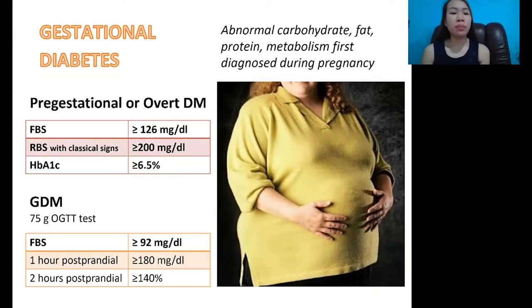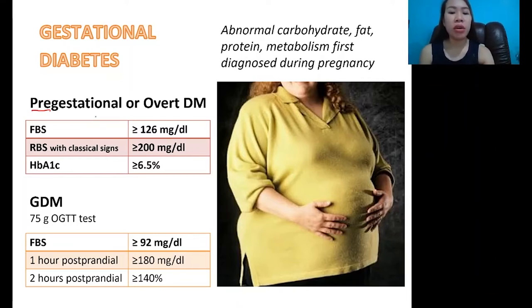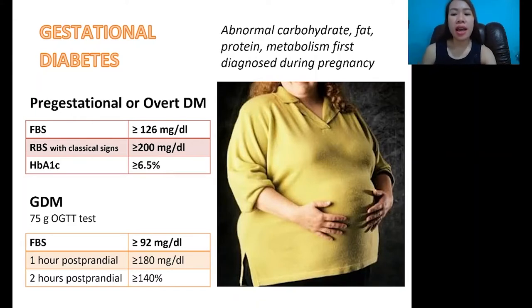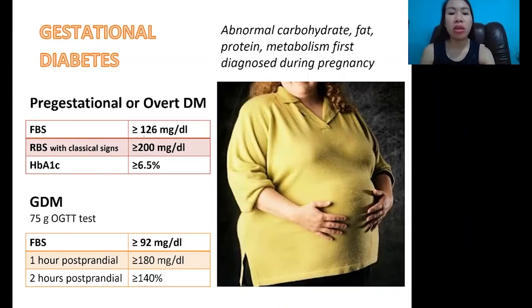We also have what we call pre-gestational or overt diabetes mellitus. When we say 'pre,' it means before the mother was pregnant. This is assessed with fasting blood sugar greater than or equal to 126 mg per deciliter. When we say fasting, meaning you have not eaten or consumed any fluid for 8 hours before the blood sugar is taken. Even after 8 hours without eating, if the result is still greater than or equal to 126, then you will be diagnosed as having pre-gestational diabetes.